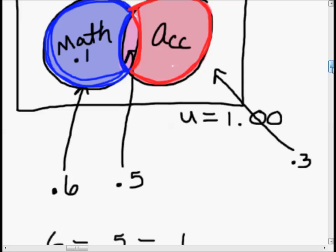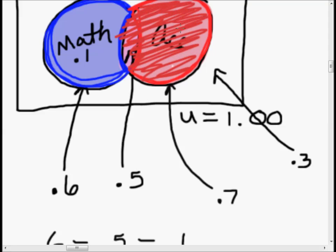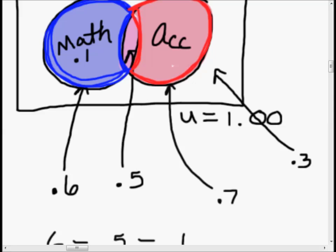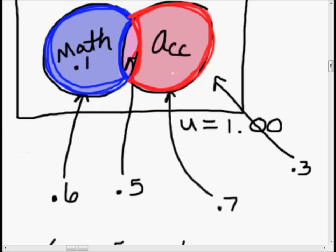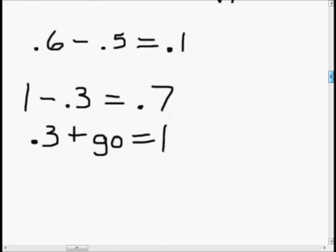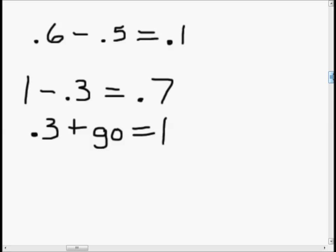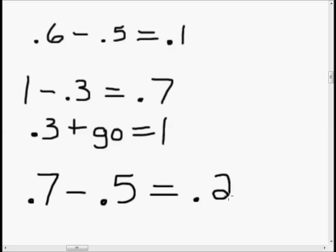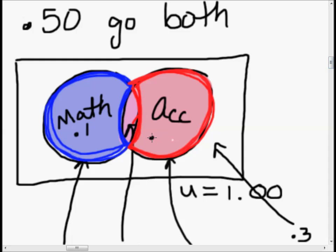Just like we did with math, we want to find just the accounting Pac-Man shape — without the overlap. We know there's a 0.7 chance she went to accounting at all, and a 0.5 chance she went to both classes. So the chance she only went to accounting is 0.7 minus 0.5, which equals 0.2. I'm going to go ahead and label that 0.2 on the diagram.